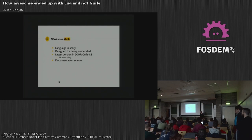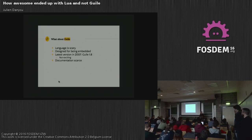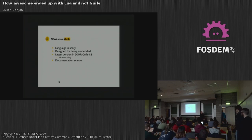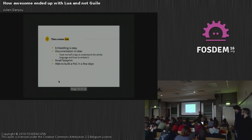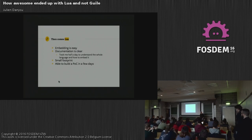The documentation was really scarce — not necessarily bad or outdated, but not really helpful for a novice user like me who knew nothing about embedding a language. But Lua on the other end was super easy. I remember I read the whole manual in like a day, and a week later I had a proof of concept of Awesome doing things with Lua. I was able to add title bars with just two lines of Lua in my C program. It was very, very easy and very fast.